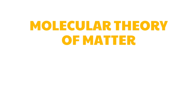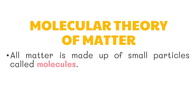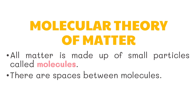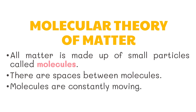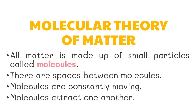Early scientists attempted to explain the composition and behavior of matter through the molecular theory of matter. This theory has the following assumptions: (1) All matter is made up of small particles called molecules. (2) There are spaces between molecules. (3) Molecules are constantly moving. And (4) Molecules attract one another. This theory was later improved over time and named the kinetic molecular theory of matter.